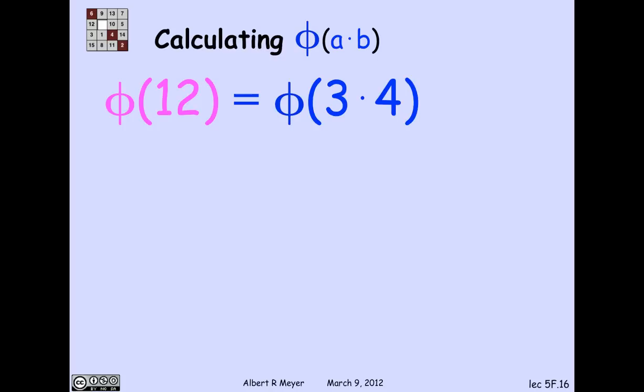So in particular, phi of 12, which looked complicated earlier, well, 12 is 3 times 4. So that means that phi of 12 is phi of 3 times phi of 4.